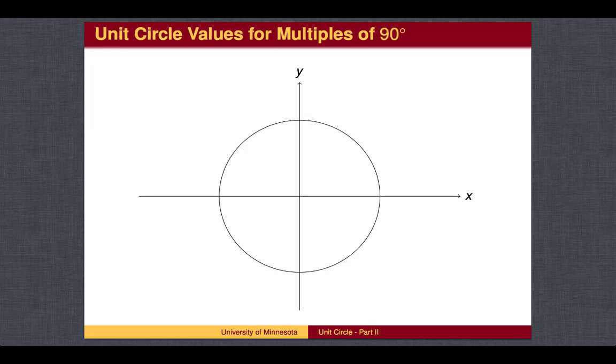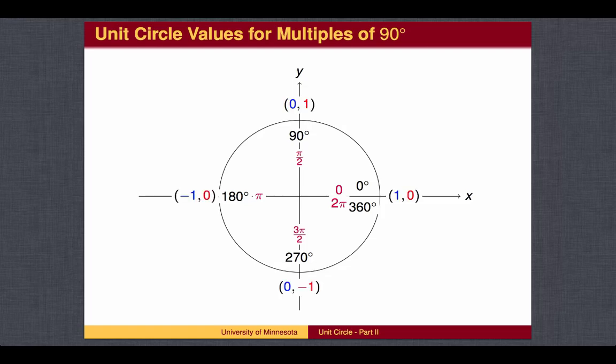To recap, we have developed a function which has as its input an angle, which can be measured in either degrees or radians, with the zero angle at the positive side of the x-axis and positive angles moving counterclockwise from there. The output of the function is a point — an ordered pair on the unit circle. The cosine of an angle is the x-coordinate of the corresponding point, shown here in blue, and the sine of an angle is the y-coordinate of the corresponding point, shown here in red.